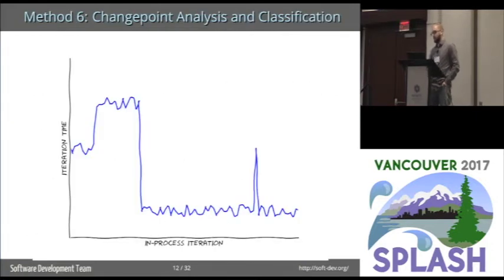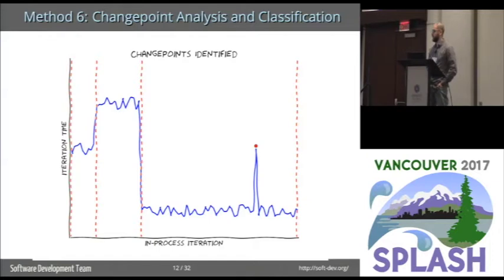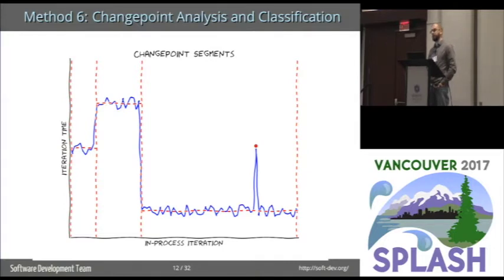Once we've collected our data, we decided to automatically classify all of our process executions to say how they warmed up — whether they warmed up in a good fashion, whether they remained flat. We use a method called change point analysis. We take our process execution data, identify outliers and ignore them, then identify change points. On our plots, change points are vertically dashed red lines. Between each change point, we have what's called a change point segment — a collection of consecutive in-process iterations whose mean and variance were very similar. We're picking apart all of the phases from our data and using these segments to automatically say whether a process execution warmed up in a good manner.